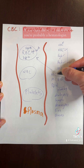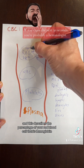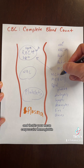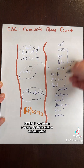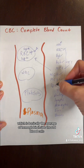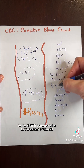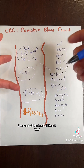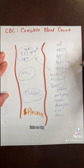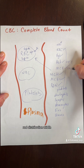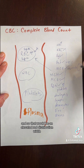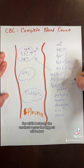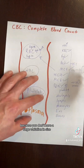MCH is mean corpuscular hemoglobin, and this describes the percentage of your red blood cell that is hemoglobin — expressed as a percentage. MCHC is mean corpuscular hemoglobin concentration, which is basically the average concentration of hemoglobin inside the red blood cells. RDW is red distribution width, which responds to the volume of the cells. When your body makes red blood cells of many different sizes, you have a wide — elevated — red distribution width. If they're basically the same size, the RDW will be low.